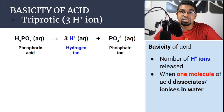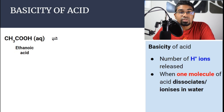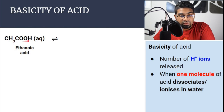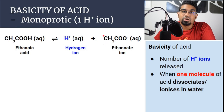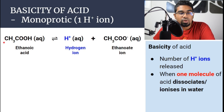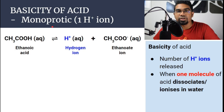It is important to note that not all hydrogen atoms will be released when the acid is dissolved in water. In the case of ethanoic acid, it has four hydrogen atoms. However, when dissolved in water, only one hydrogen atom becomes a hydrogen ion — the other three remain as part of the anion and are not ionized. Therefore, ethanoic acid is a monoprotic acid because it only releases one hydrogen ion when dissolved in water.